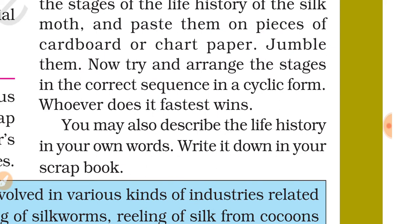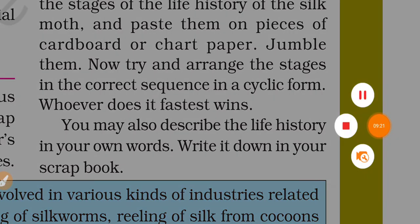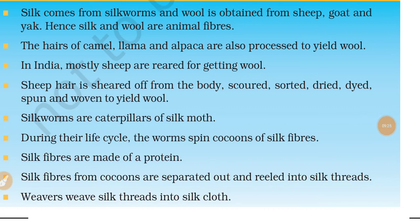In this chapter you have learned that silk comes from silkworms and wool is obtained from sheep, goat, and yak. Hence, silk and wool are animal fibers. The hairs of camel, llama, and alpaca are also processed to yield wool. In India, mostly sheep are reared for getting wool — sheared, scoured, sorted, dried, dyed, spun, and woven to yield wool. Silkworms are the larval stage of the silk moth; during their life cycle the worms spin cocoons of silk fibers, which are made of a protein. Silk fibers from cocoons are separated out, reeled into silk threads, and weavers weave them into silk cloth.